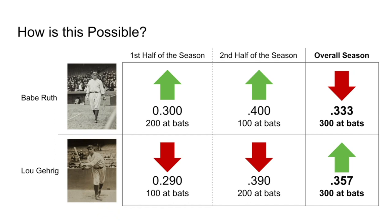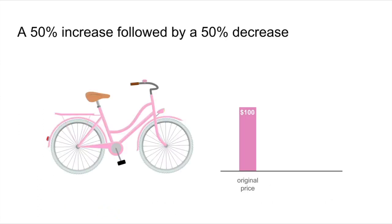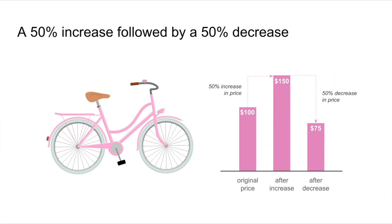Two more situations involving percent change — this is one that always tricks us. Let's say you want to go buy a bicycle for $100. They decide to increase the price by 50%, so it goes up to $150. Now, if you were to decrease that price by 50%, you would think it would go back to its original price, but it doesn't. It goes lower, because the new 50% decrease is taken from that larger number. Half of 150 is 75. So the bicycle after the decrease is actually 25% lower than the original price point. When you increase by a percent and then decrease from the higher base, you end up lower than where you started. A 50% increase followed by a 50% decrease does not get you back to where you started.